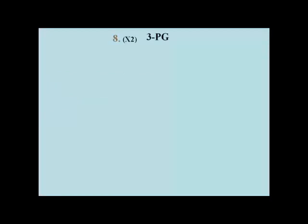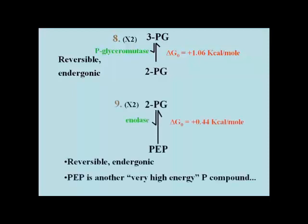The next two reactions are each modestly endergonic and freely reversible. First, the phosphate group on 3-phosphoglyceric acid (3PG) is shifted to the number 2 carbon by a mutase in a reversible endergonic reaction. Then 2PG is converted to phosphoenolpyruvate (PEP) in another reversible endergonic reaction.